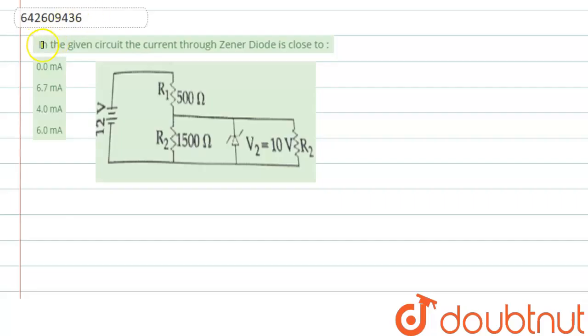Hello everyone, let's start the question. Question says that in the given circuit, the current through Zener diode is close to.